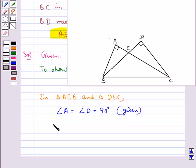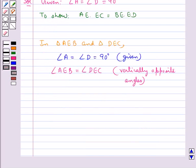Then we have angle AEB is equal to angle DEC since they are vertically opposite angles. Thus we say triangle AEB is similar to triangle DEC by AA similarity criterion.